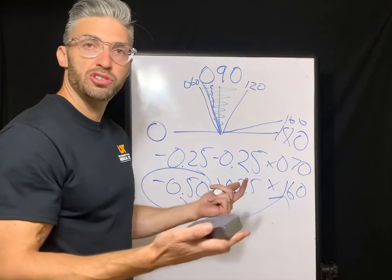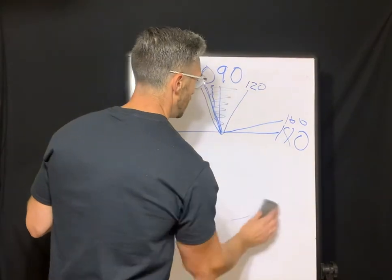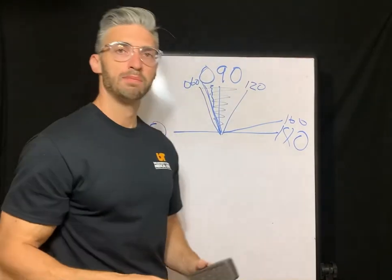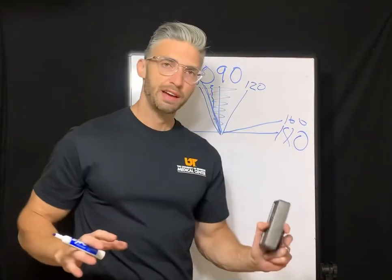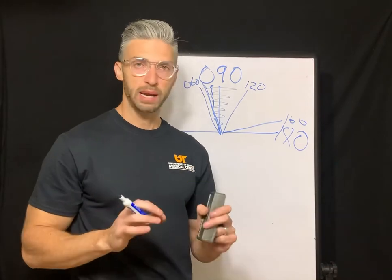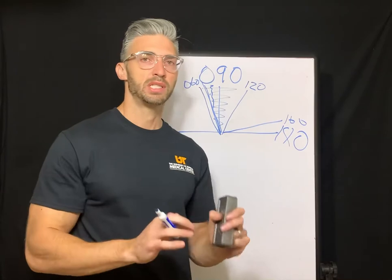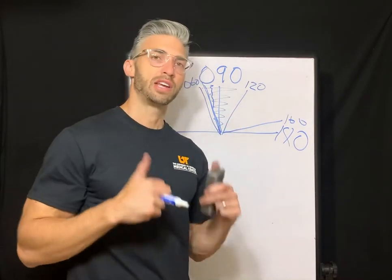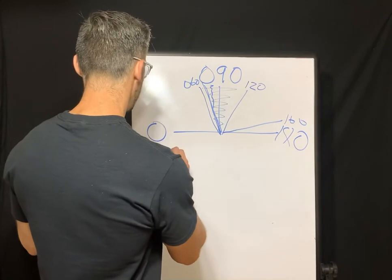The 160 is within 30 degrees of 180. So this negative a half is neutralizing our steeper meridian of the cornea. So it's against the rule astigmatism. And let's do some K readings for against the rule. If you work through a couple of these examples, it'll start to click.